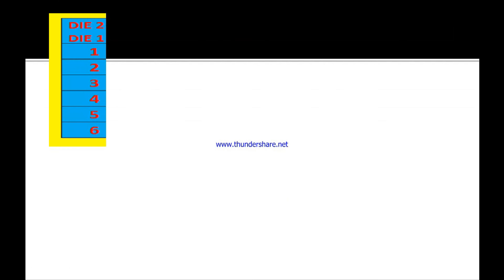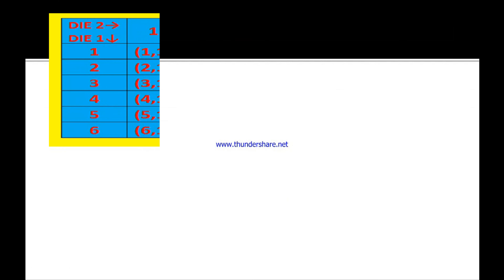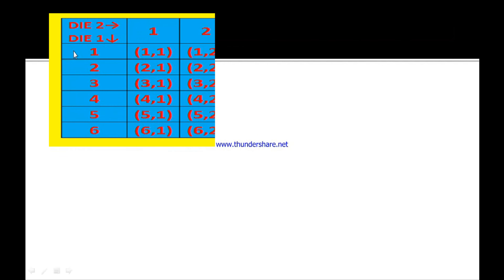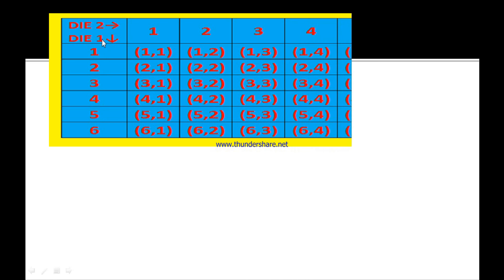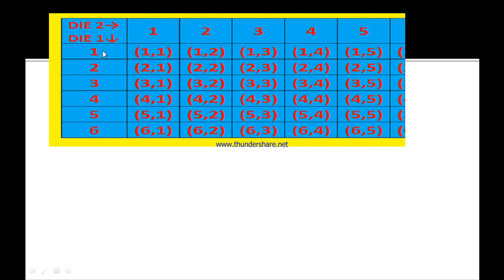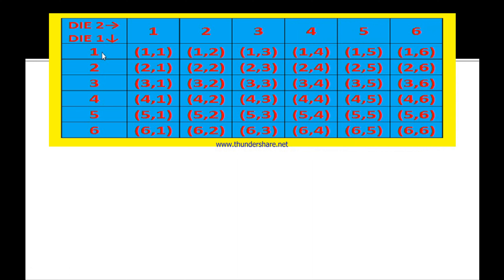Here is the solution. In order to solve this, we took a table. These are the scores on the first die — if you throw the first die, the scores may be 1, 2, 3, 4, 5, or 6. And on the second die also, you may get 1, 2, 3, 4, 5, or 6. These are the scores on the second die and these are the scores on the first die.